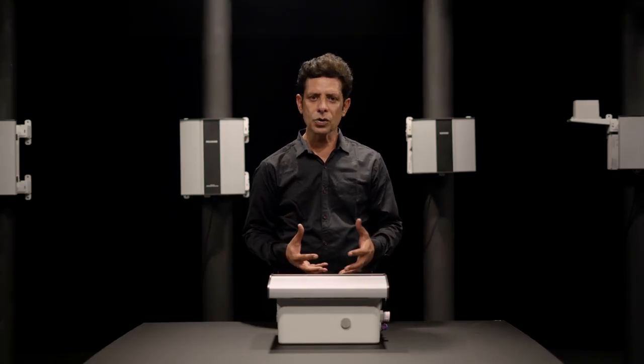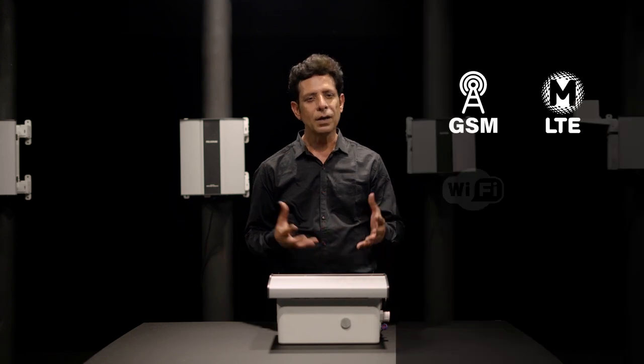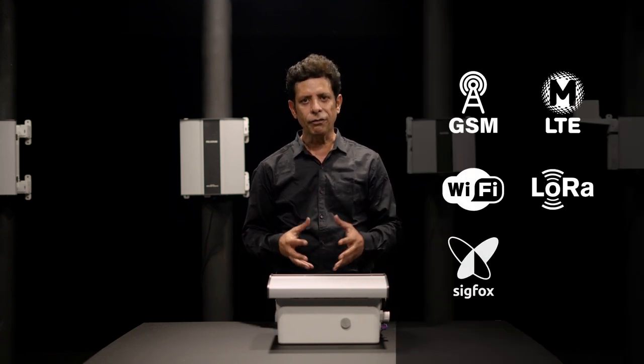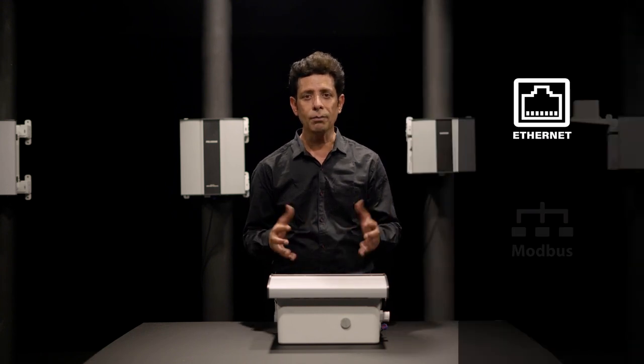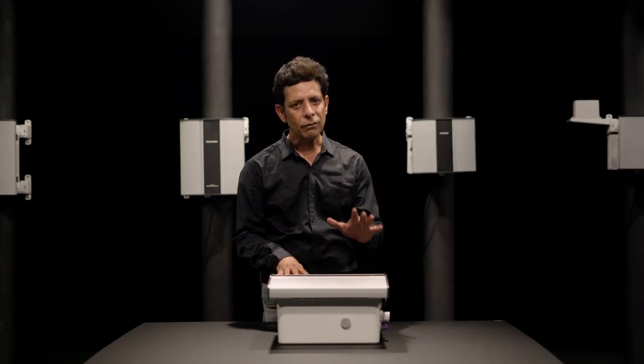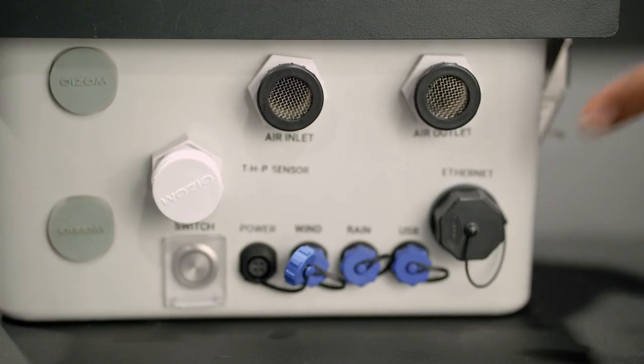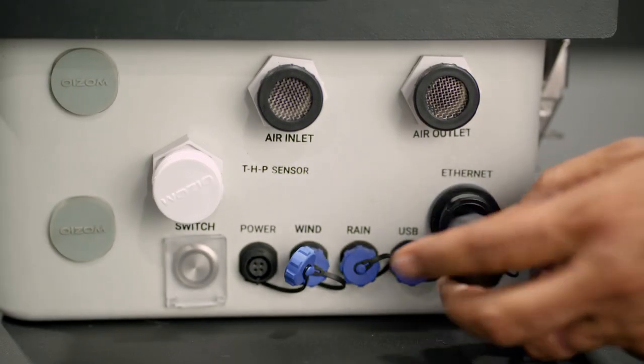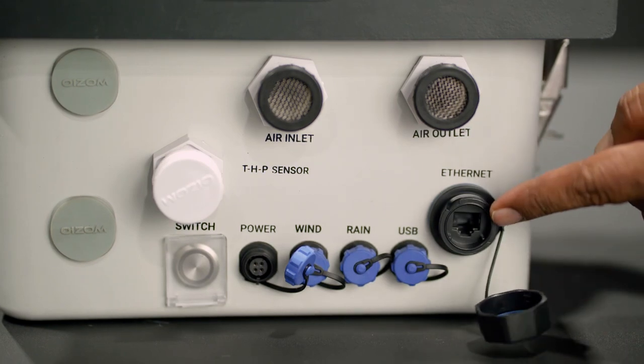For data communication, Odosense is available with range of wireless options like GSM, Wi-Fi, LoRa, Sigfox, narrowband IoT and wired options like Ethernet and Modbus. This equipment, which I have with me, is our GSM variant, whereas this is the RJ45 port for Ethernet-based connectivity as a secondary communication.